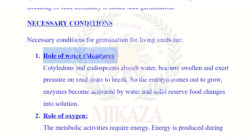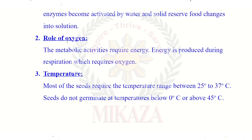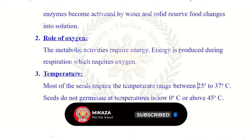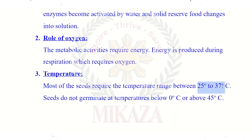The conditions for germination are: first, water — the outer layer of the seed absorbs water, causing the plants and roots to start emerging. Second, oxygen — energy is needed for metabolic activities and respiration. Third, temperature — the optimal range is 25 to 37 degrees Celsius.